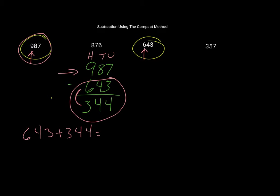Let's just work it out. 3 and 4 is 7, 40 and 40 is 80, and 600 and 300 is 900. So 987, that's what I should have, so my working out is correct.